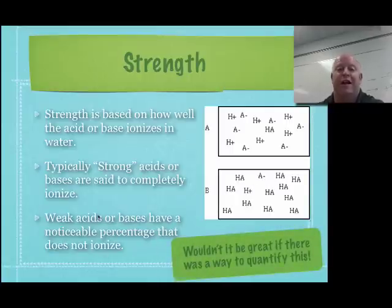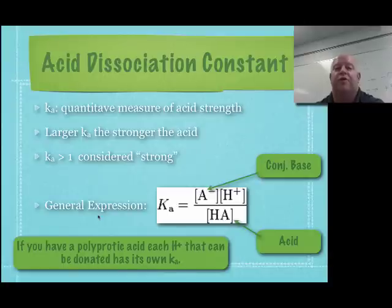Now, wouldn't it be great if we could actually quantify this or actually put numbers to strong and weak? Well, if you remember from our last unit, we were able to quantify our equilibriums by KEQs. So we can do the exact same thing in this unit, but instead of calling it a KEQ, we call it Ka.